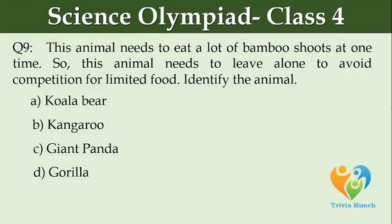This animal needs to eat a lot of bamboo shoots at one time, so this animal needs to live alone to avoid competition for limited food. Identify the animal. Option A: koala bear. Option B: kangaroo. Option C: giant panda. Option D: gorilla.